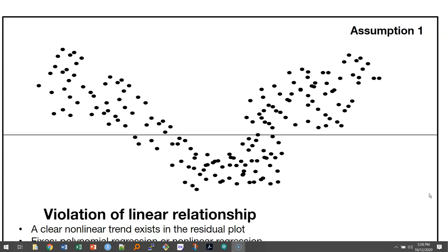This is how a residual plot would look. Imagine we have fitted values on the x-axis from our regression and residual values on the y-axis. This would indicate a violation of the linear relationship—it's clear there is a nonlinear trend in the residual plot. Some fixes might be polynomial regression or some kind of nonlinear regression.